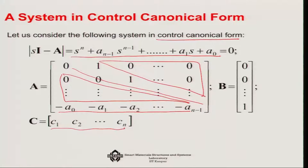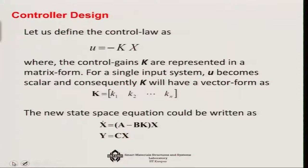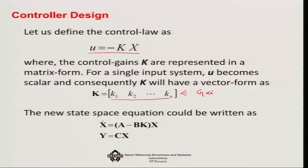We will be concerned mostly with A and B when designing the controller; C is addressed during observer design. Defining the control law as U equals minus Kx, where K has structure K1 to Kn — a gain vector — designing the controller means finding what these gain values will be. The new state space equation becomes x-dot equals A minus BK times x, and Y remains Cx. Only the first state equation is affected by the introduction of the control law.